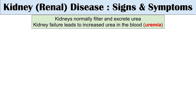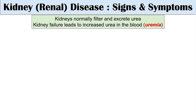The kidneys are very important in excreting many toxins and balancing electrolytes. One toxin in particular is urea — a breakdown product of protein metabolism. The kidneys normally filter and excrete urea, but when there's kidney failure, this leads to increased urea in the blood, what we call uremia. This abnormally high level of urea in the blood can lead to several important signs and symptoms we need to recognize.